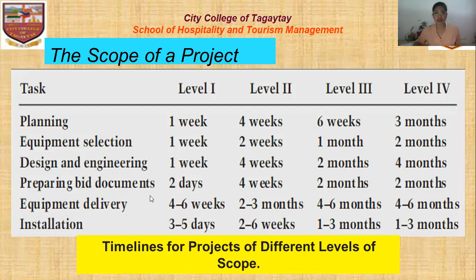For preparing bid documents: Level 1 is two days, Level 2 is four weeks, Level 3 is four weeks, and Level 4 is four to six months.